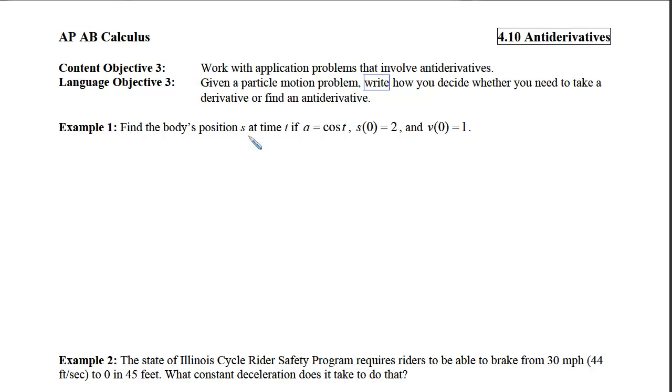So first we will write down that the velocity function will be the antiderivative of this plus some random constant. So we have to answer the question, what did I take the derivative of with respect to t that gave me cosine? And the answer to that question is the sine of t plus some random constant. Now because we're going to have to go backwards twice, we're going to put a subscript of 1 on that constant.